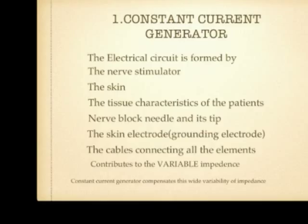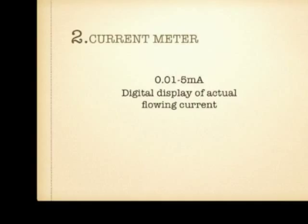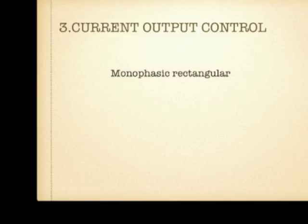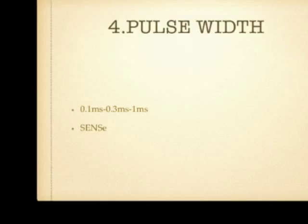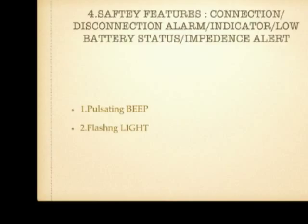The nerve stimulator should have current meters and the ability to increase or decrease current up to five milliamps, with a digital display of flowing current. You should have control of the current output. The current used should be monophasic and rectangular, meaning it goes in one direction only — from machine to patient, not back. Pulse width, or the duration of the current, should have the ability to be adjusted: 0.1 millisecond, 0.3 millisecond, or 1 millisecond duration. Newer nerve stimulators come with a SENS technique, which is sequential stimulation of nerve.